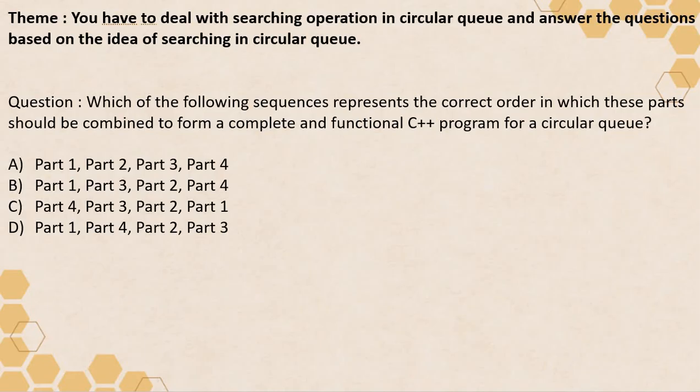I have not given you the answer in the slides. You only have to solve it. You have to solve which order of execution out of these four options is going to give you the correct order for operation in a circular queue. I hope it will not be that tough for you to solve. You can pause the video wherever I have shown you Part 1, 2, 3, and 4, then you can understand and sort them.